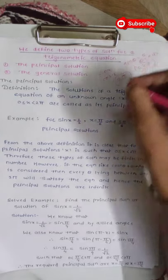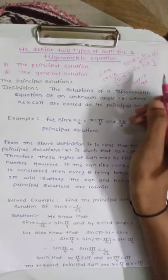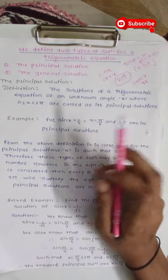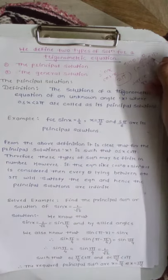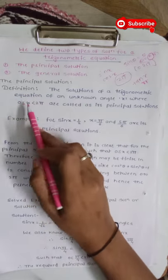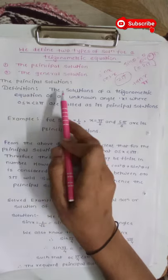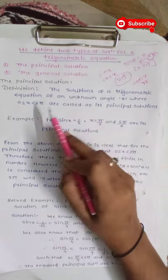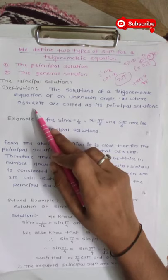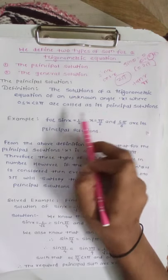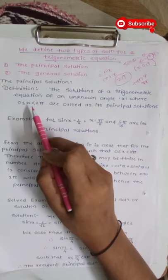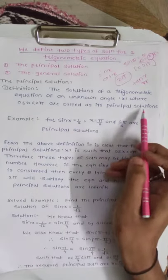The general solution expresses all values which satisfy the given equation, and it is expressed in a generalized form in terms of n, where n is an integer. The formal definition of the principal solution is: the solutions of a trigonometric equation for an unknown angle x, where 0 is less than or equal to x is less than 2 pi, are called its principal solutions. These are the values of the trigonometric equation lying between 0 and 2 pi.